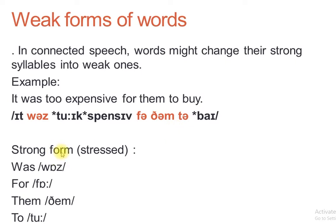This needs some practice — you need to repeat it several times until you master the weak forms. Strong forms are stressed. Look at the words: 'was', 'for', 'them', and 'to' — these are written in red, meaning they are weak forms. But if they are in isolation, their transcription will show the strong form.